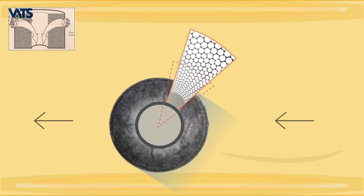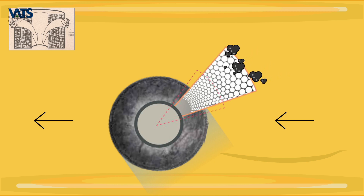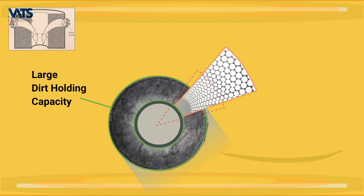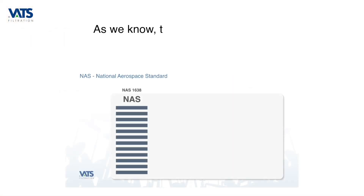While the larger particles are trapped in the outer layers, the smaller particles keep going down towards the center. This means that particles across the whole range of size distribution get trapped at different depths across the filter, so the filter now has a large dirt holding capacity while absolutely not sacrificing on efficiency.